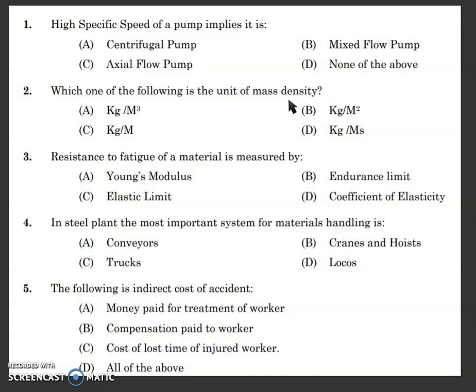Endurance limit is known as the fatigue limit — the stress level below which a material has an infinite life. That is the maximum life of the material. So the resistance to fatigue of the material is measured by the fatigue limit or endurance limit. The answer is B.